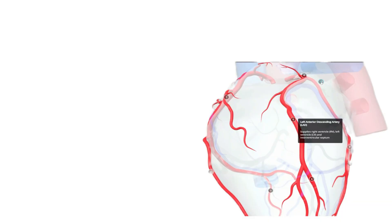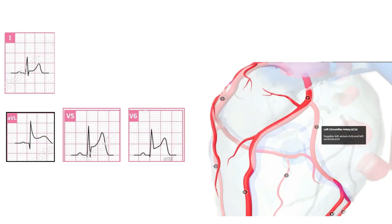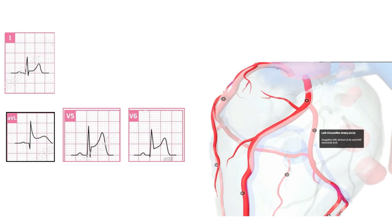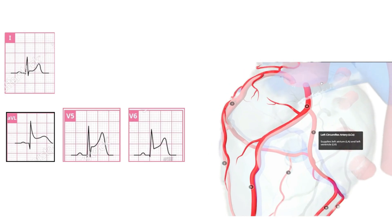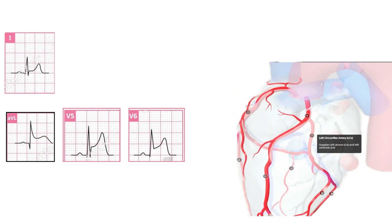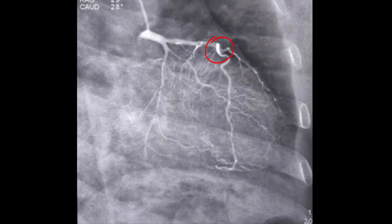And now finally the LCX. The blockage here produces ST segment elevation in lead 1, AVL, V5 and V6. The lateral side of the heart and the back. This corresponds to the lateral wall of the heart. On the angiography the LCX blockage is seen along the left atrioventricular groove here.